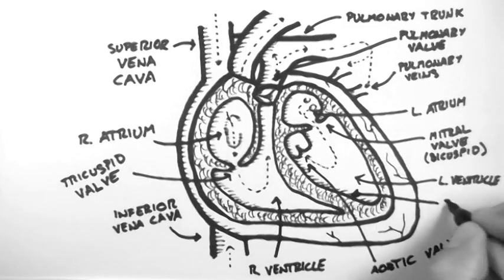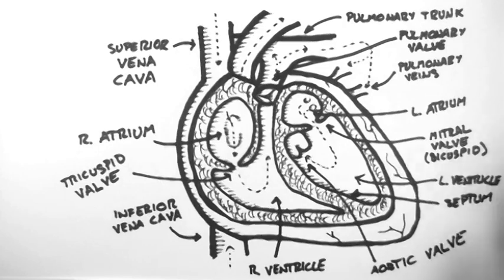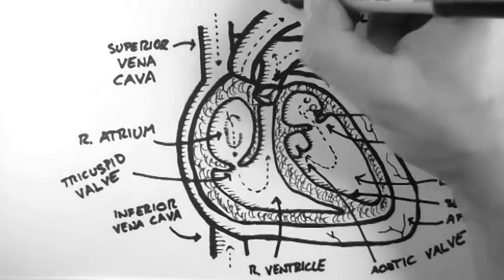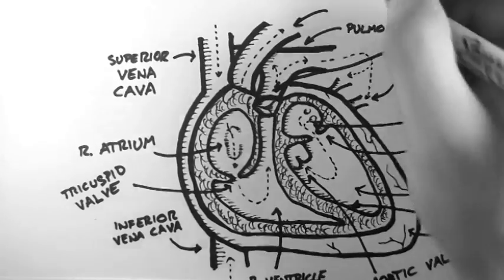Here is the interventricular septum. This is the septum that lies between the two ventricles. Here is the apex, and finally here is the aorta.